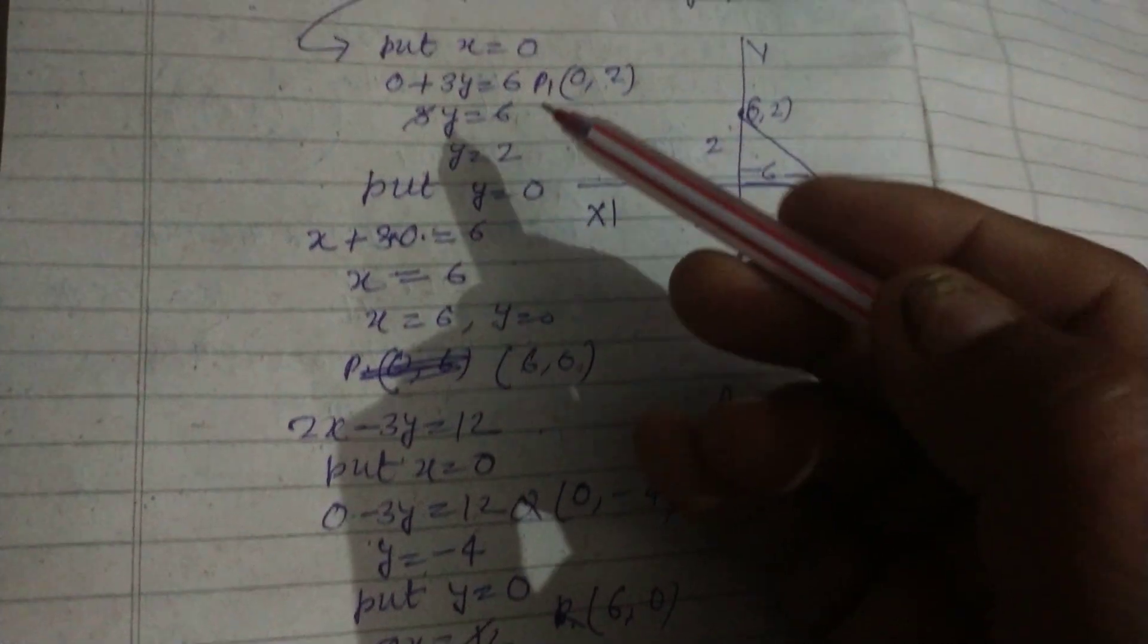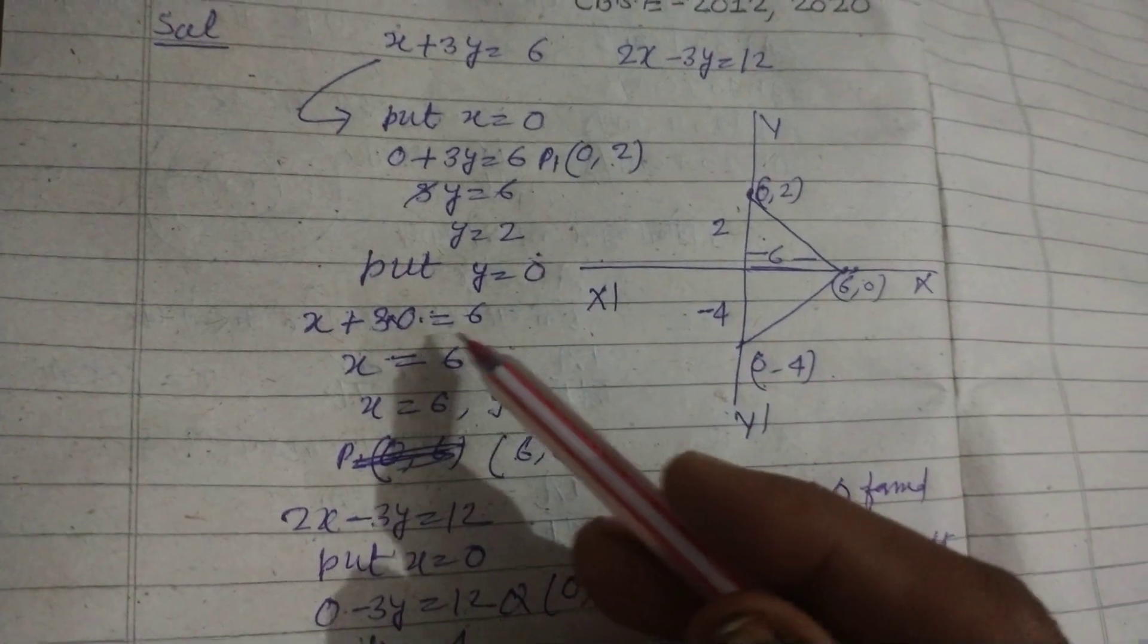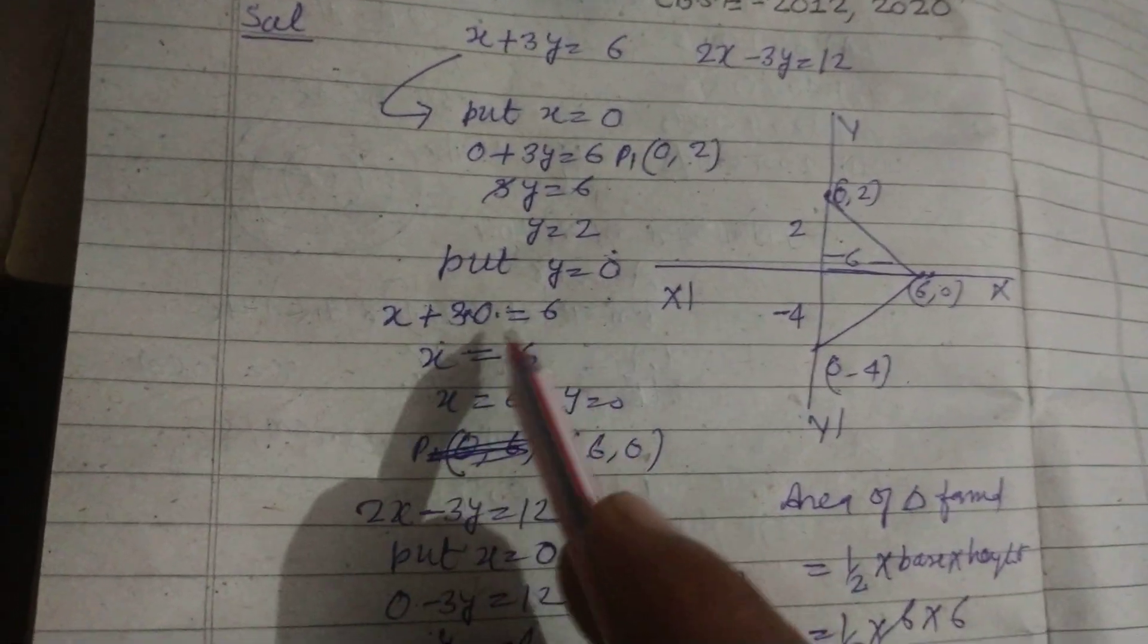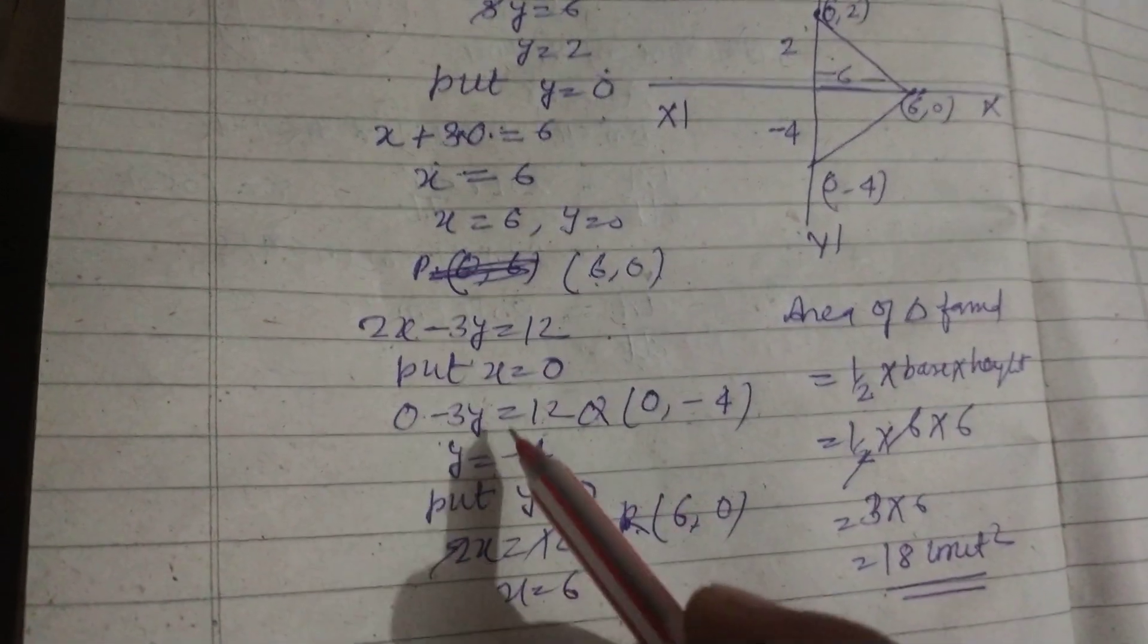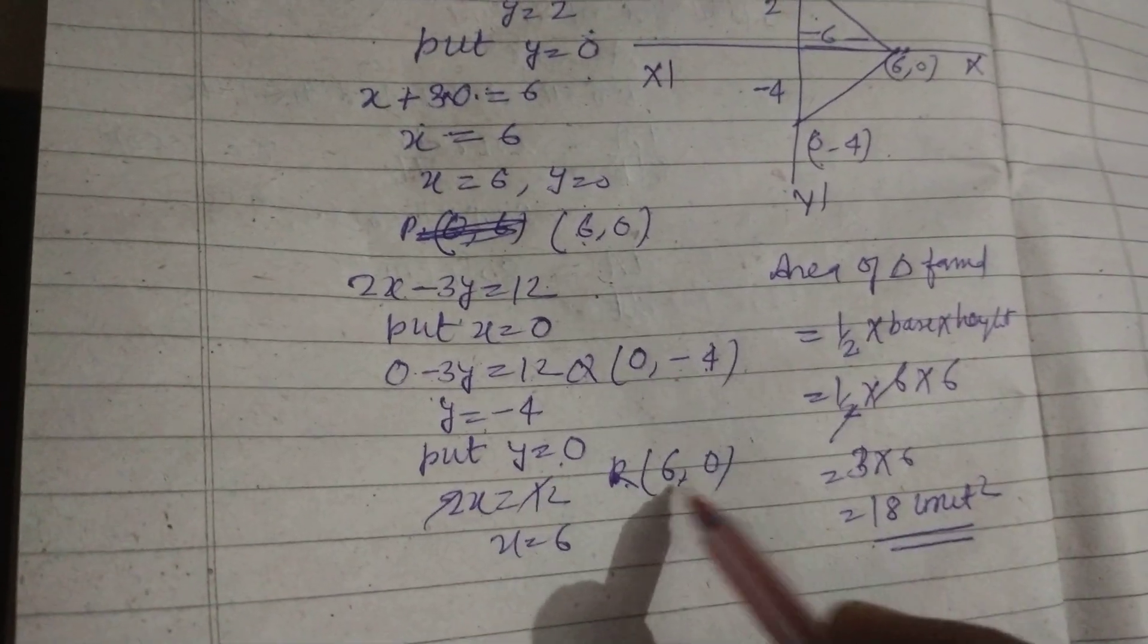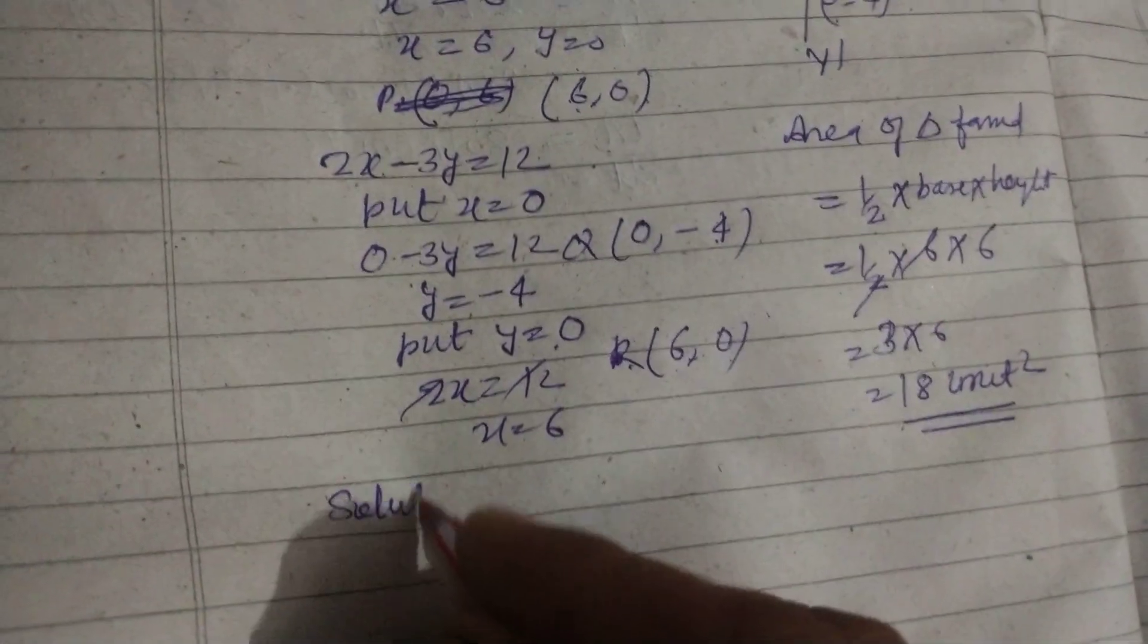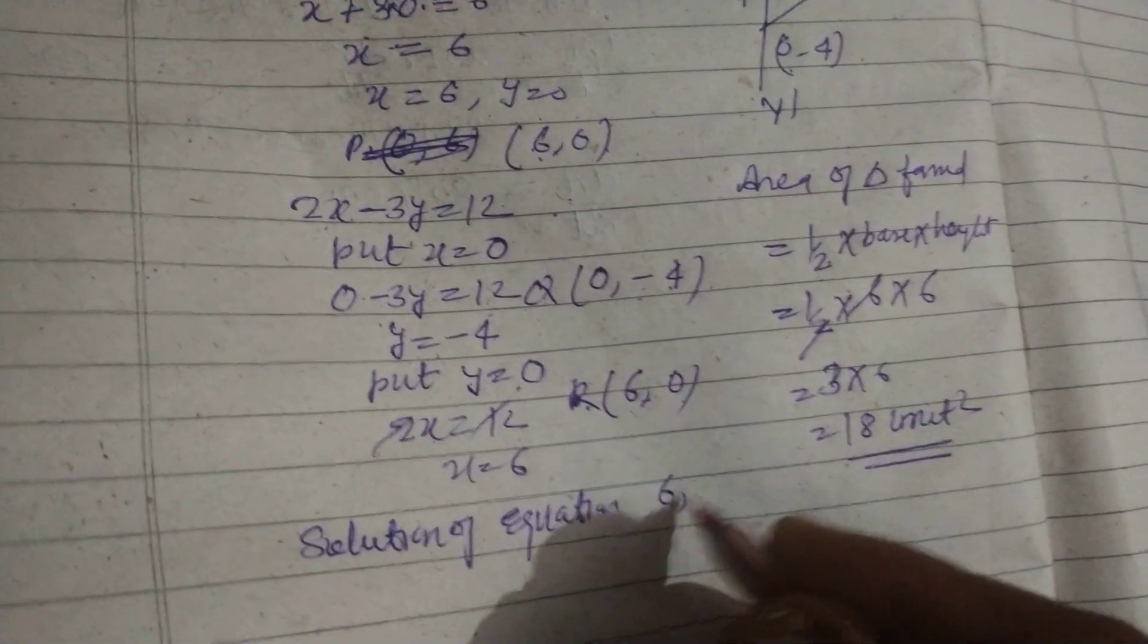So what we do? We take x equal to 0 first and find the value of y. So we got a point 0 comma 2, and again we put y equal to 0 we got 6, so we got the point 6 comma 0. Similarly in second equation we put x equal to 0 and got 0 comma minus 4, and y equal to 0 we got 6 comma 0. So 6 comma 0 is common point, so this is the solution of equation.